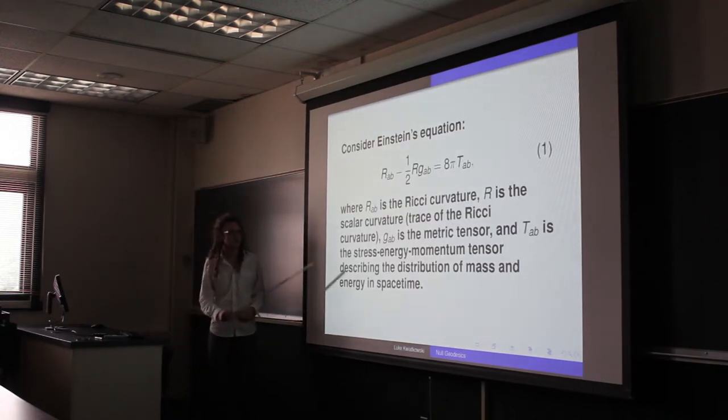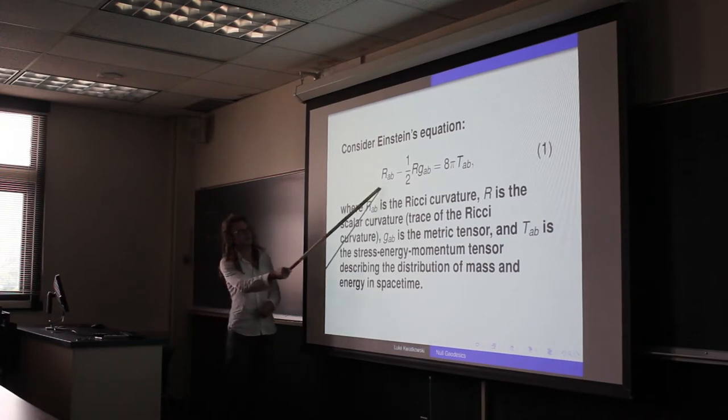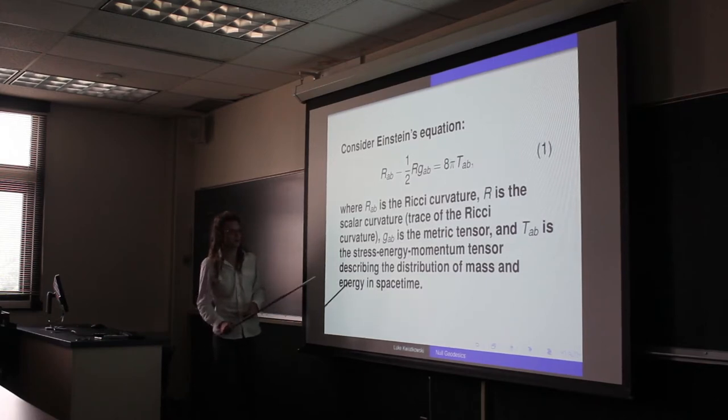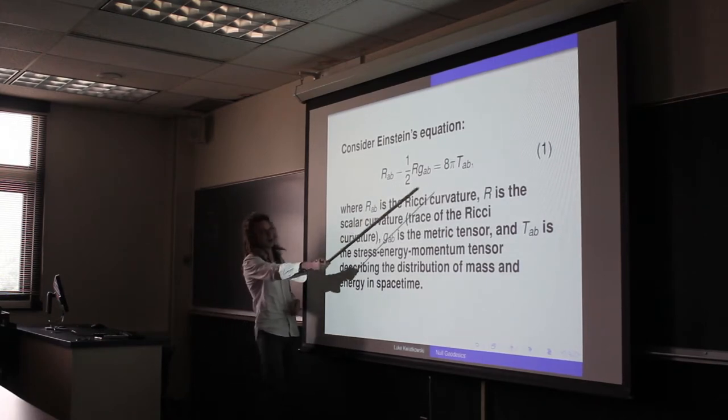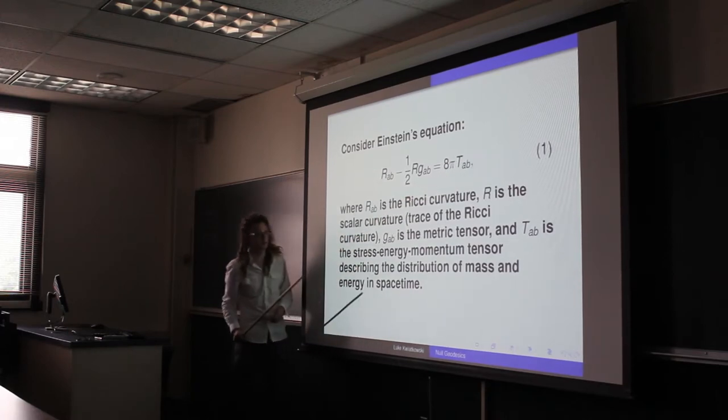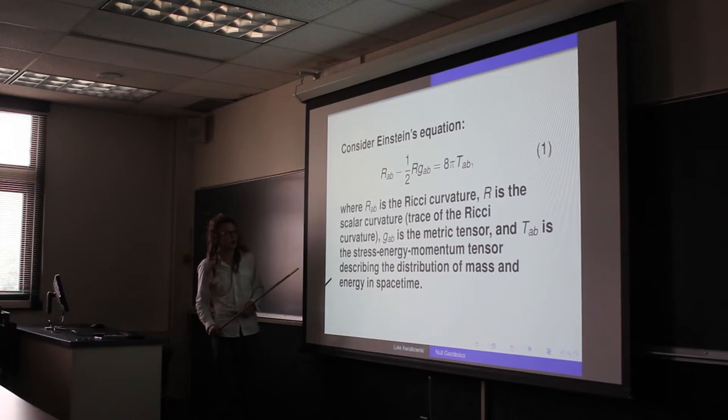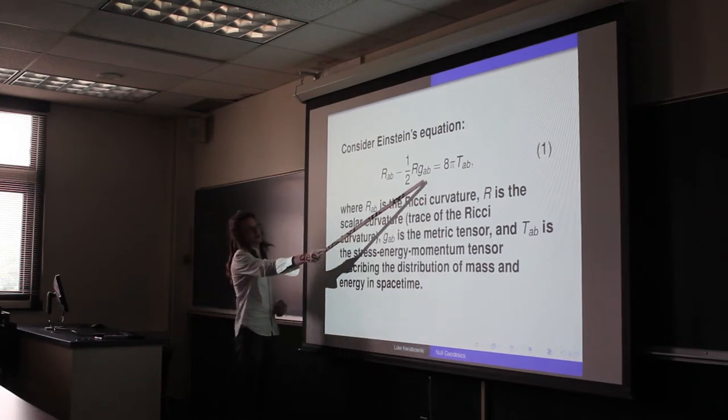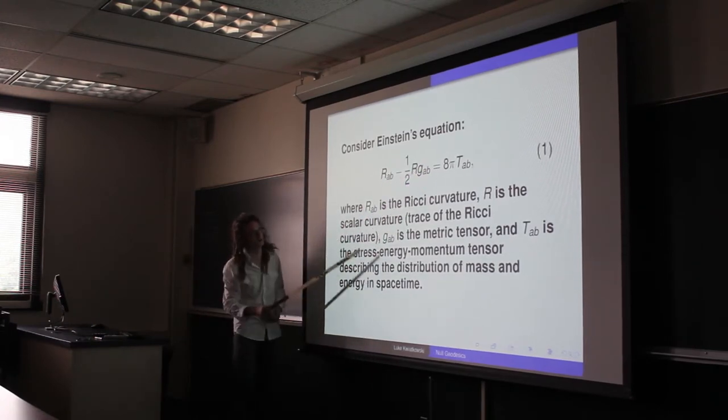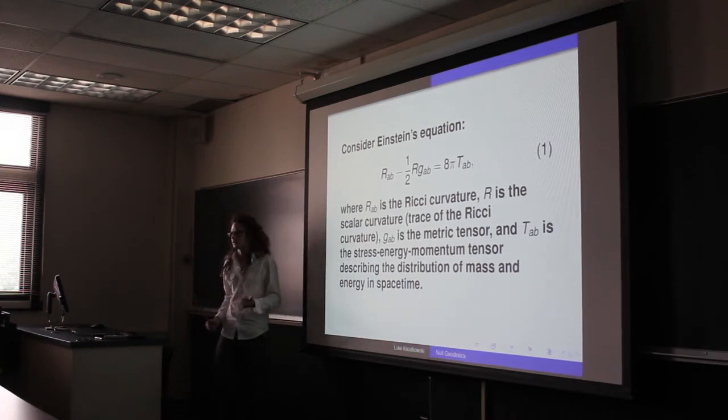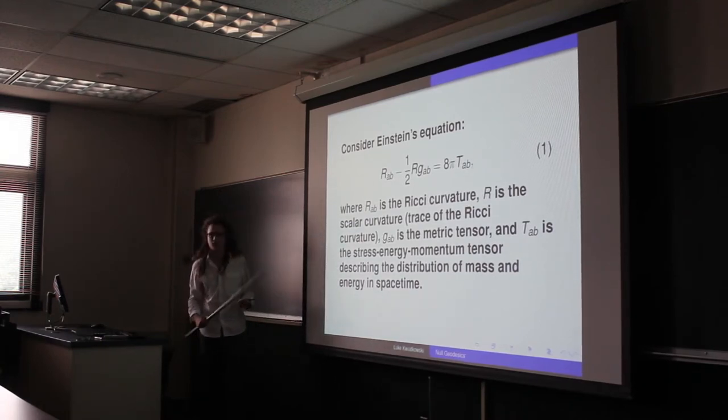Where does our work come from? Basically, it starts off with Einstein's equation, which relates the curvature of space-time with the stress-energy momentum tensor, which describes the distribution of mass and energy in space-time. What we look for is the metric which satisfies this equation. The metric lets us describe the length of vectors in our space-time.